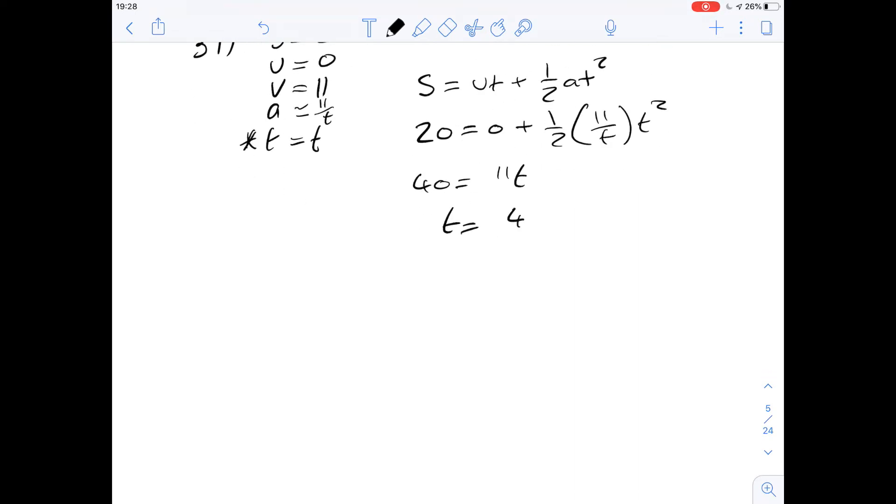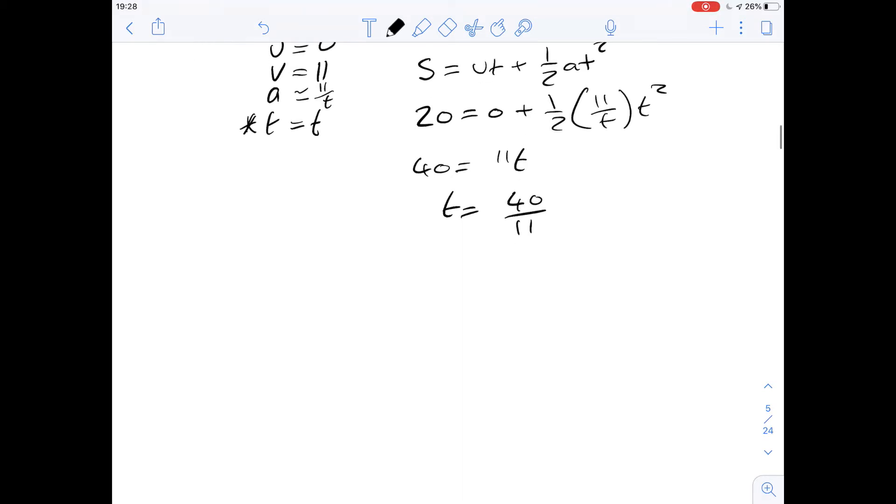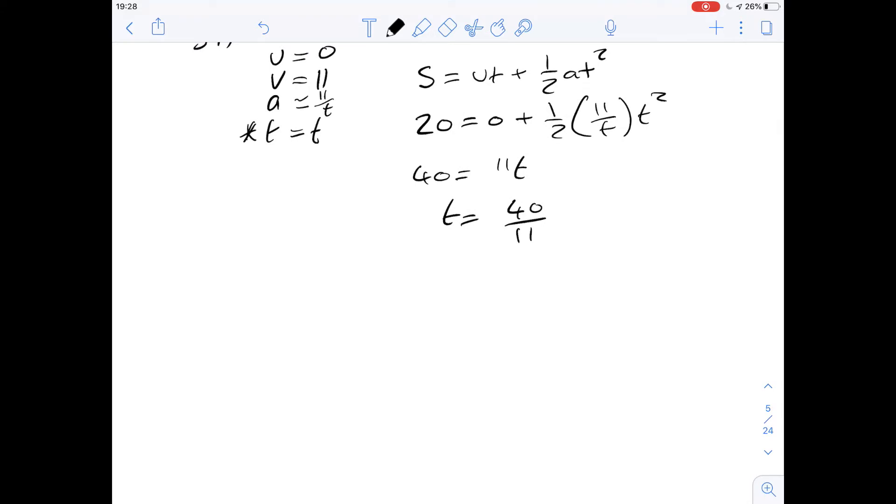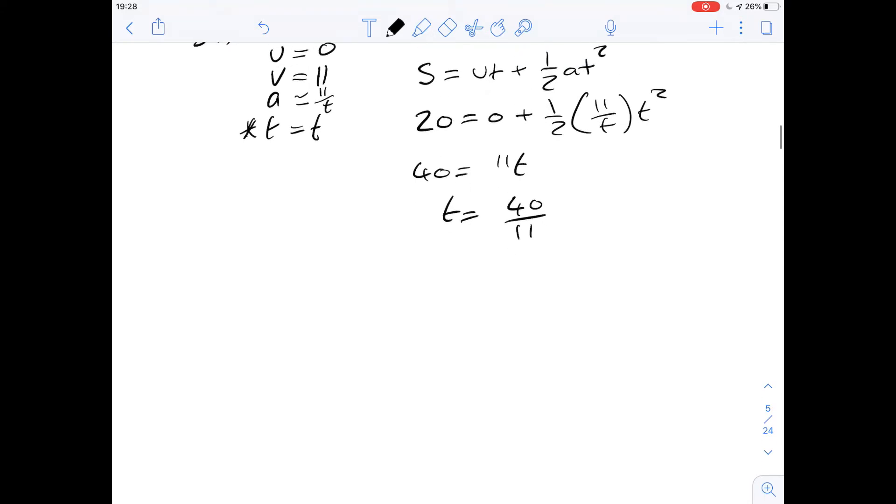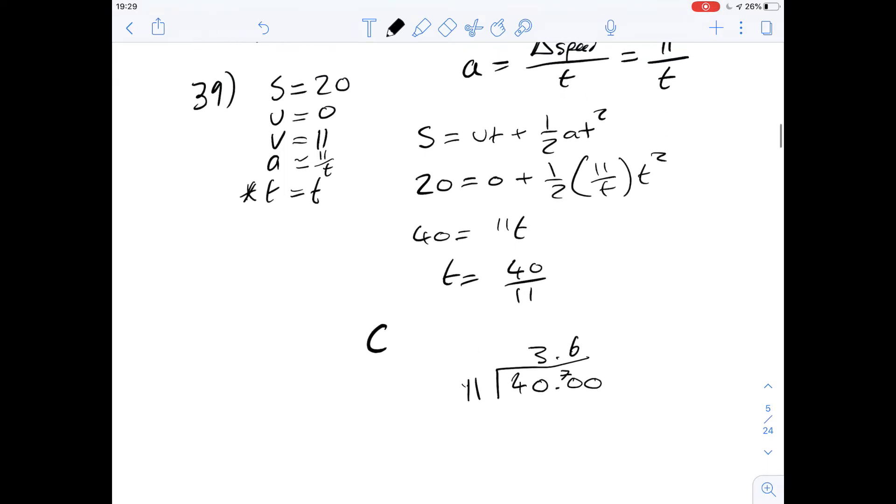That tells us that t is going to be 40 over 11 and we can work out what that is now then. So there's obviously a couple of different ways of doing this. You might want to just approximate it. I'm going to do just normal division here like this. We can see that we've got 3 into 40 here and that leaves 7, 3.6. We've already arrived at one of the answers so we can leave it there. That's left us with answer C, 3.6 seconds. So the answer for 39 is going to be C.